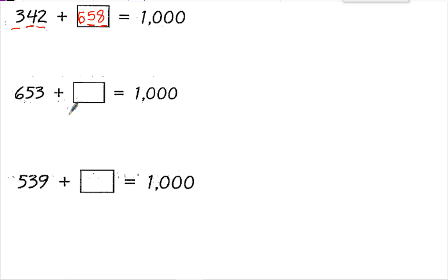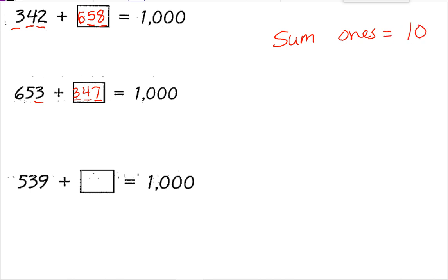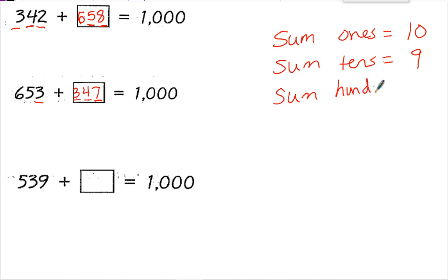On the next one: 3 plus something equals 10 — 3 plus 7 equals 10. 5 plus 4 equals 9, and 6 plus 3 equals 9. Just remember that the sum of the ones place has to add up to equal 10, the sum of the tens place has to add up to equal 9, and the sum of the hundreds place also has to add up to equal 9.